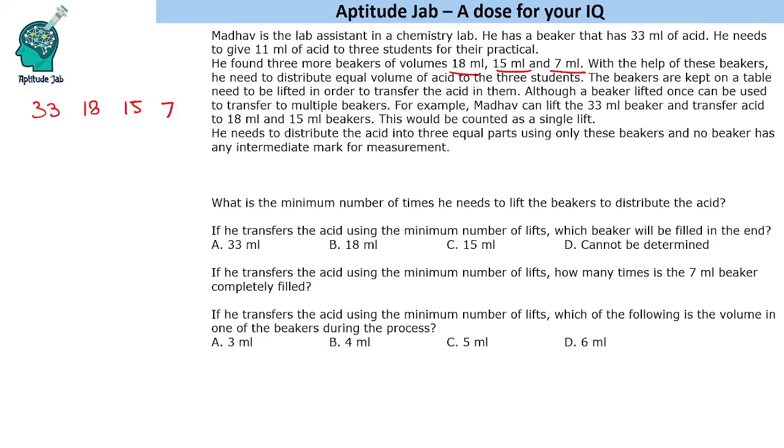Let's say initially this is filled, we can transfer to multiple beakers. Like we can put 18 here and 15 here, 18 and 7 here. That will be considered as a single lift. Now he has to distribute into 3 equal parts using only these beakers and no beaker has an intermediate mark for measurement.